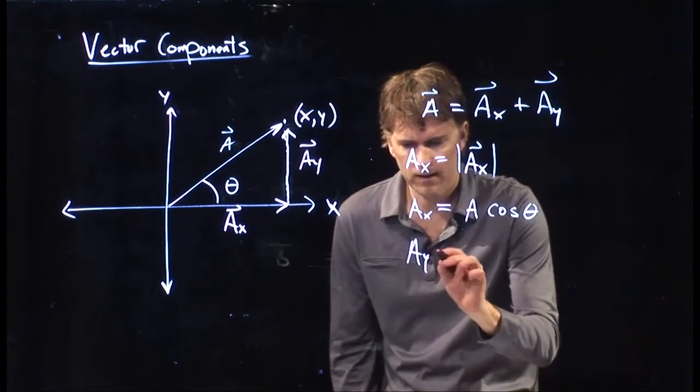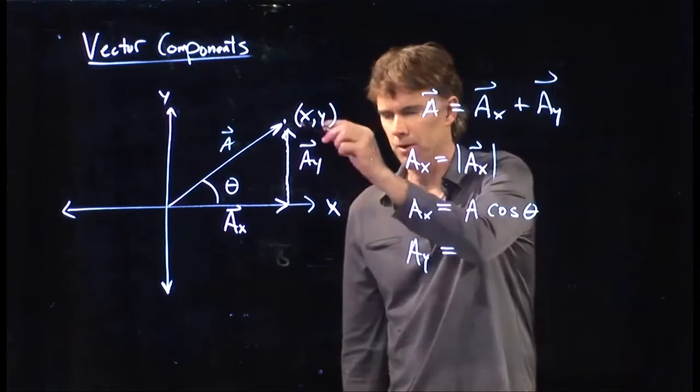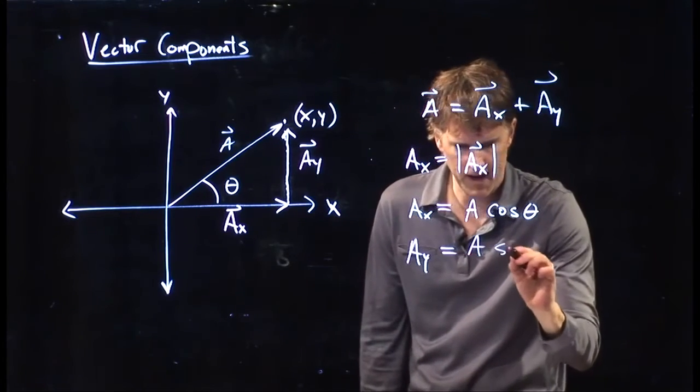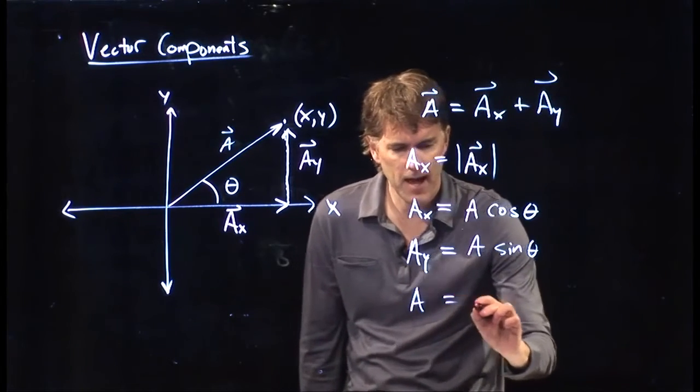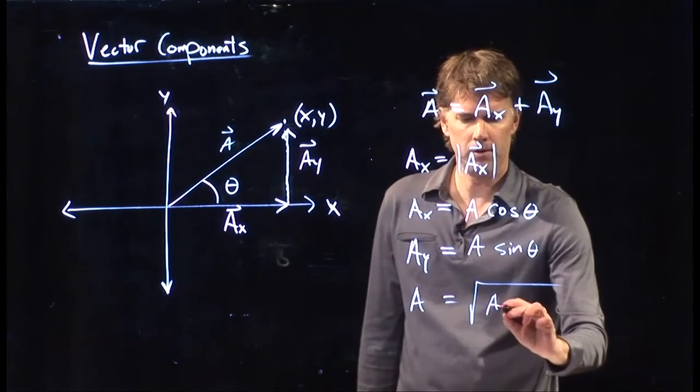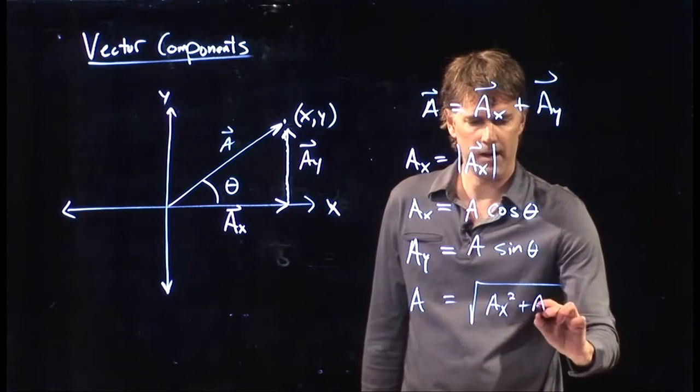A_y is this side of the triangle, which is of course just A sine theta. And the magnitude A is just the square root of A_x squared plus A_y squared.